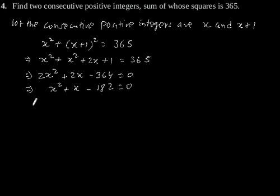Now using factorization method, splitting the middle term, we get x² + 14x - 13x - 182 = 0.